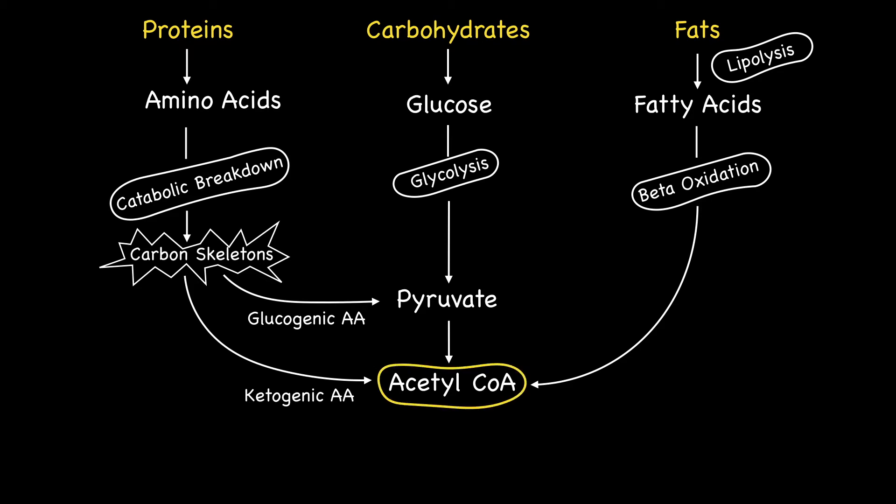Like three streams joining to form a raging river, all three macronutrients are destined in the production of Acetyl-CoA. Based on this, it's not surprising that Acetyl-CoA is also known as the common intermediate of the metabolism. What happens next to this common intermediate sets the theme for this presentation.